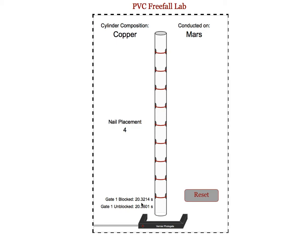Students should use that difference in time, along with the 5 centimeter height for the cylinder, to find the average speed of the cylinder as it's passing through the photo gate. That will be approximately the same speed as the cylinder will have when the center of the cylinder is moving through the photo gate.